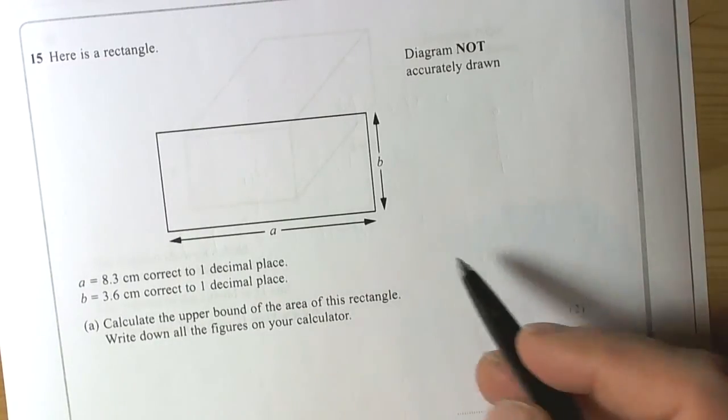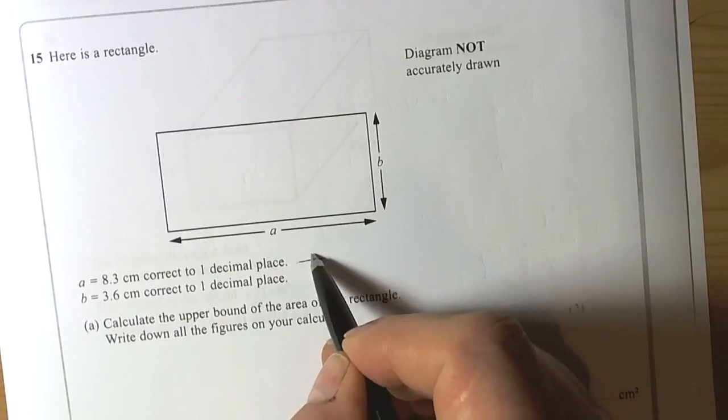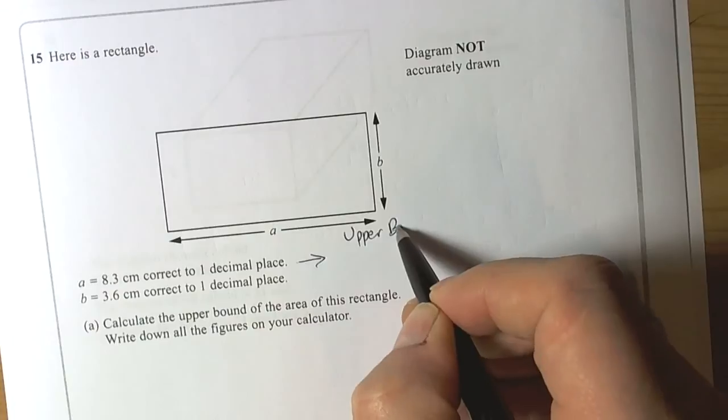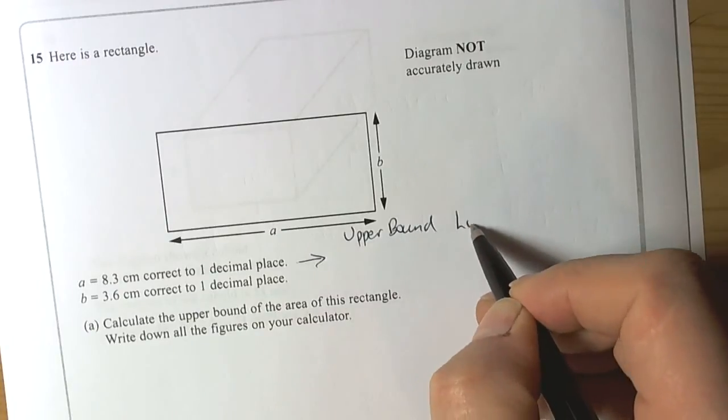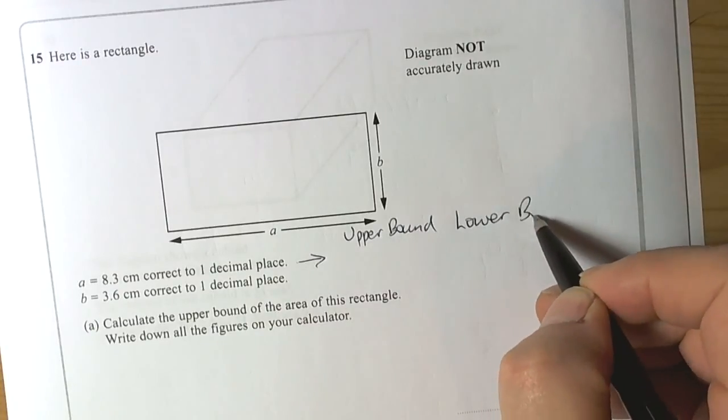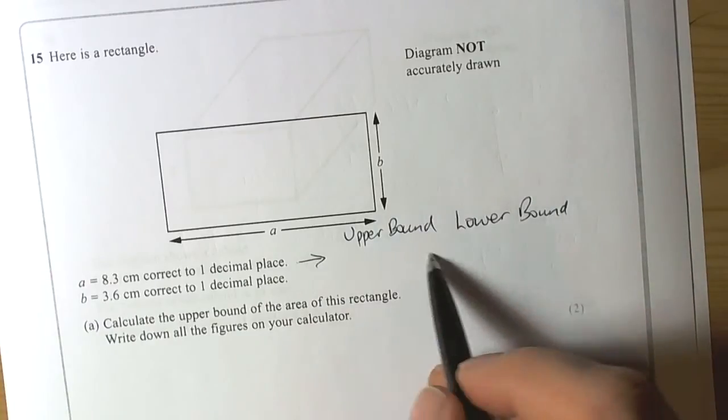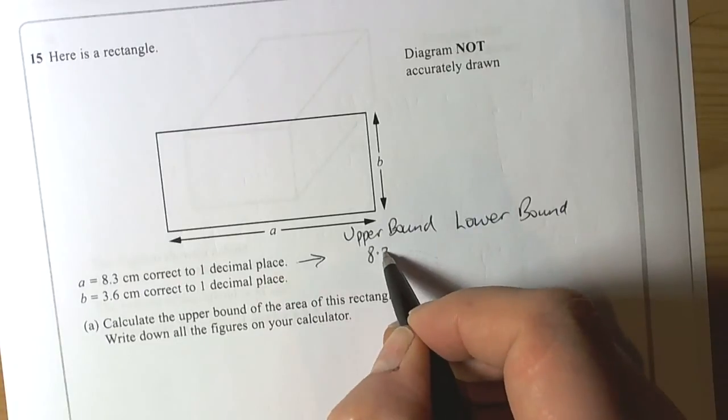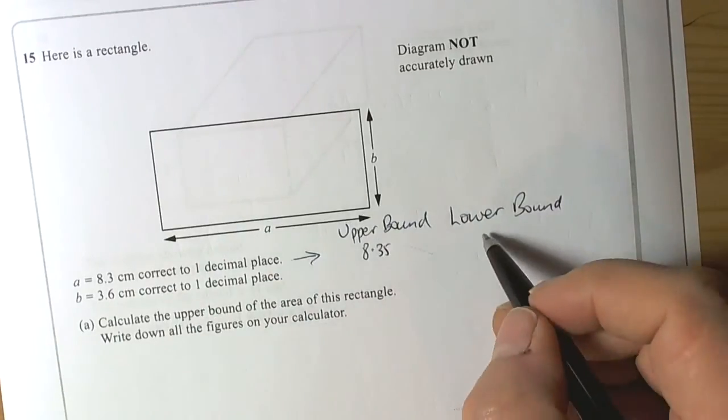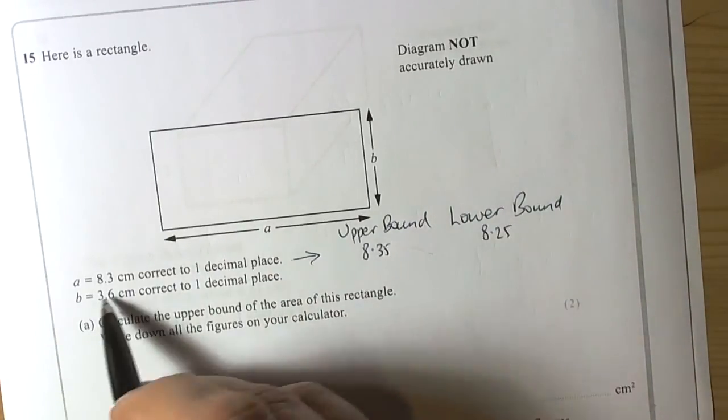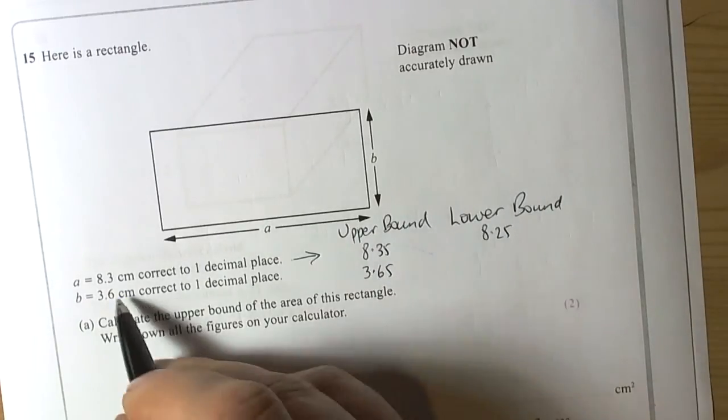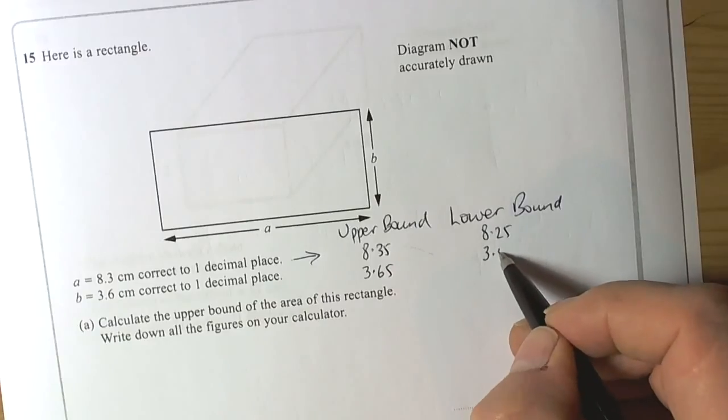Calculate over the area. So basically we need to find out what the upper bound and lower bound is for the lengths. And we should be thinking that the upper bound is going to be 8.35 and the lower bound is going to be 8.25. And for B, it's going to be upper bound of 3.65 and a lower bound of 3.55.